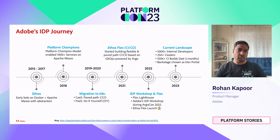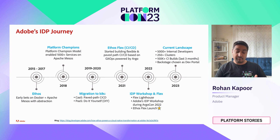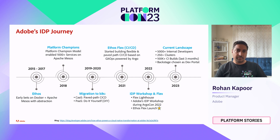From 2019 to 2020, Kubernetes had matured and we decided to essentially migrate to it, creating two offerings: CAS, which is Abstracted Wave Path CI/CD, and PaaS, which is DIY do-it-yourself. The abstraction on the DCOS or Mesos platform came handy, and we were able to migrate those services to Kubernetes. Come 2021, we started building Ethos Flex, which brings the best of both worlds, and in 2022 we launched Flex.